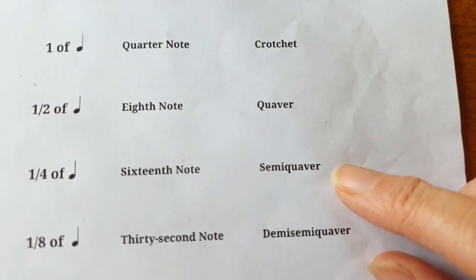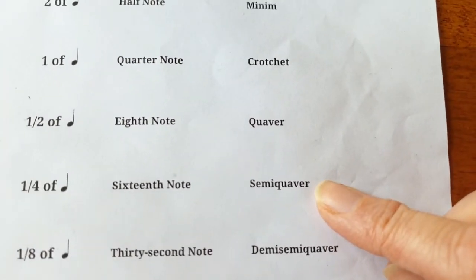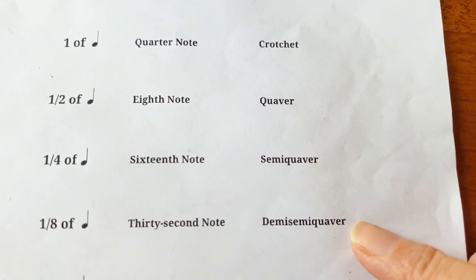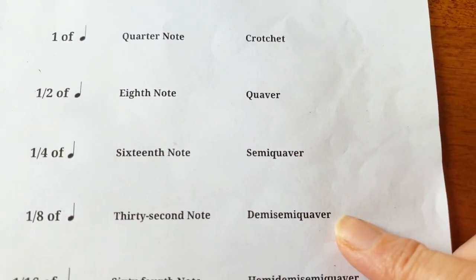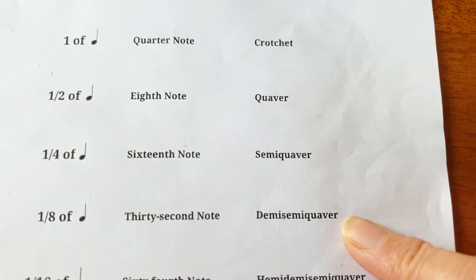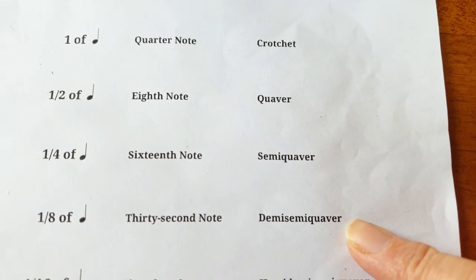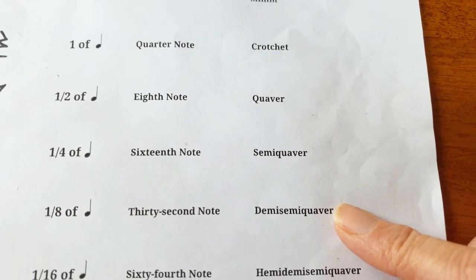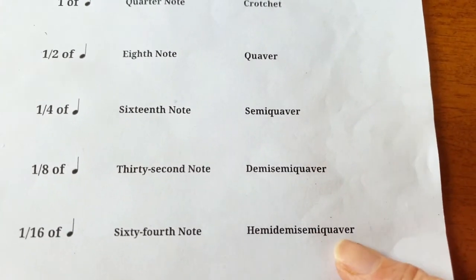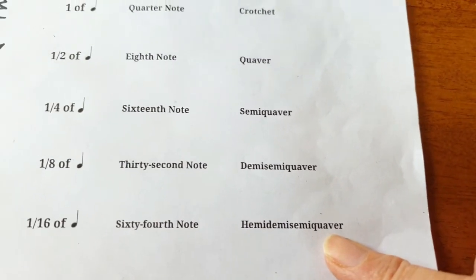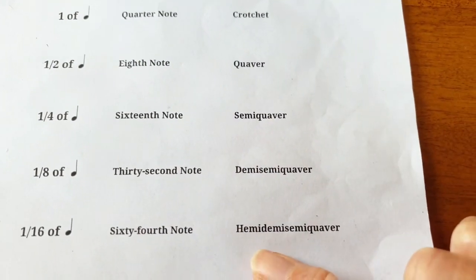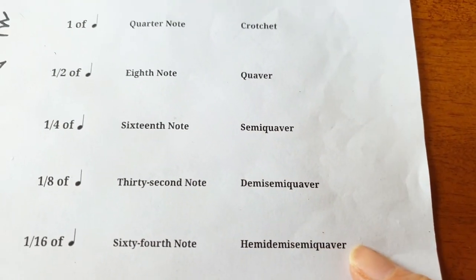Semiquaver — 'semi' means half. The next one is a demisemiquaver — 'demi' also means half, so it's half of a half of a quaver. And 'hemi' also means half, so you've got half of a half of a half of a quaver.